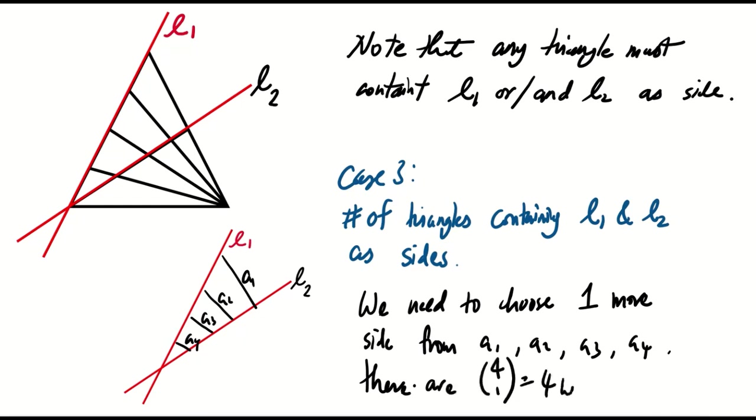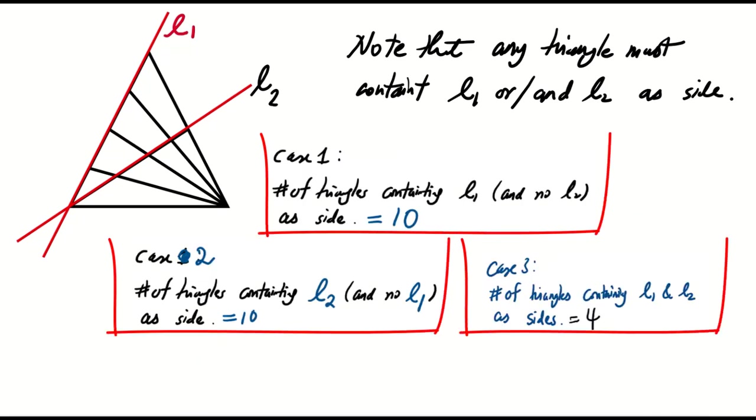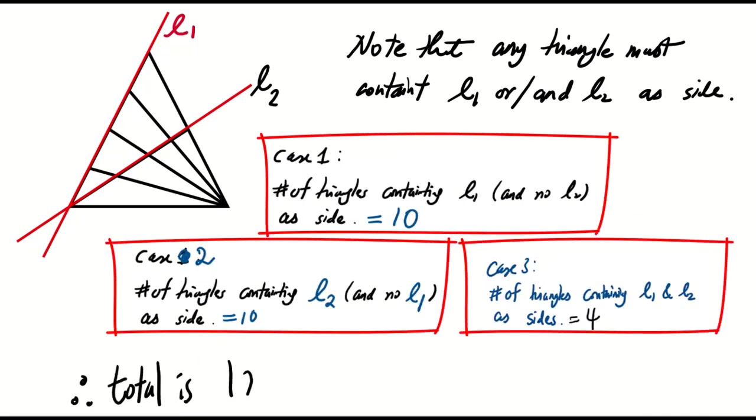Hence, there are four triangles in case three. Based on these three cases, it is clear that there are a total of 24 triangles in the figure.